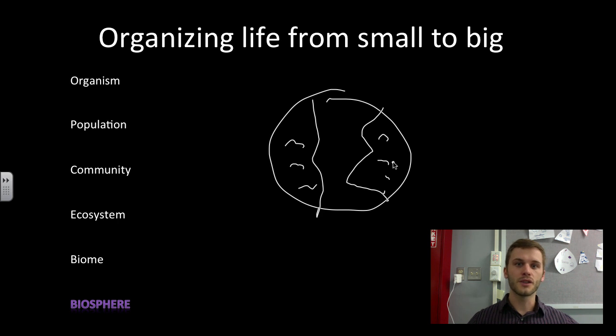So the hierarchy of life. We're going from really small to really big. And as we go from small to big, different properties emerge. And this is a way scientists try to organize life. Thank you.